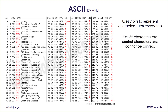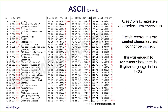The first 32 characters are called control characters and cannot be printed — things like carriage return, new line, or backspace. Those are not meant to be printed on the screen, but they still need to be sent over the network. This was enough in the 60s to represent the English language, which was the language of computing in those days.